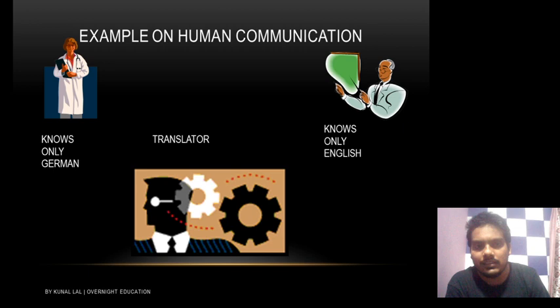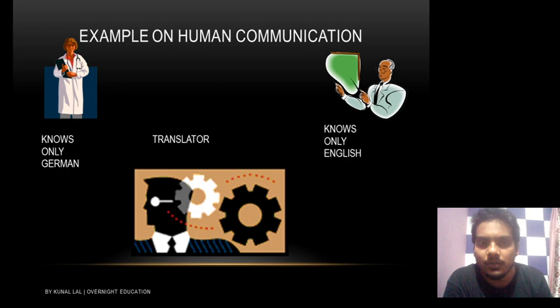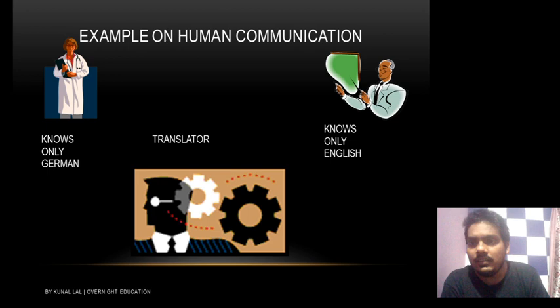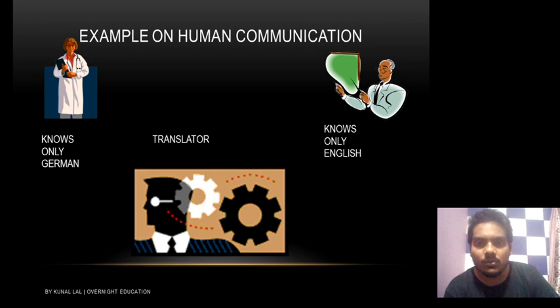Now take another example of human communication. There is one lady who knows only German and there is another man who knows only English. So will they be able to communicate? No. In this case we need a translator — a human being who can translate from German to English and English to German. The lady speaks in German, the translator converts it to English for the English man, and then converts his English reply back to German.